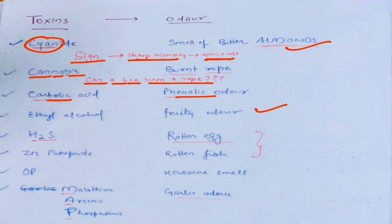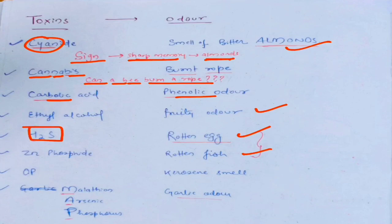Then H2S — this is one chemical you must have encountered very frequently in your chemistry labs in high school. It has the typical rotten egg smell. Then what's remaining is zinc phosphide, which shows a rotten fish appearance.